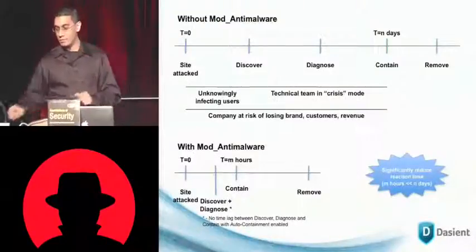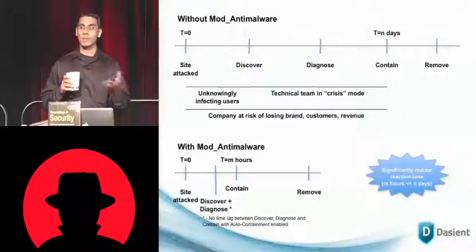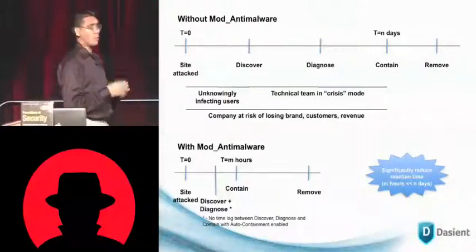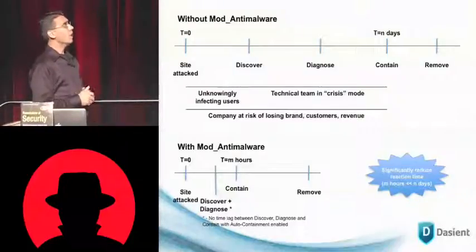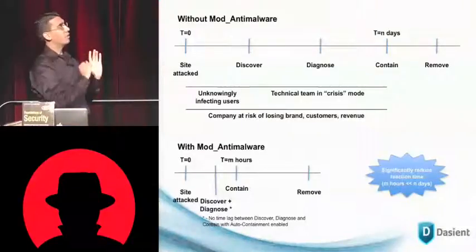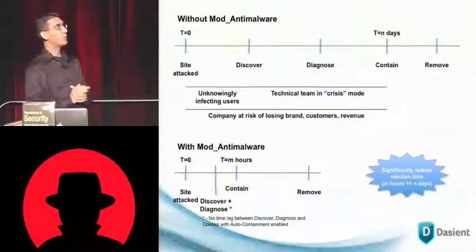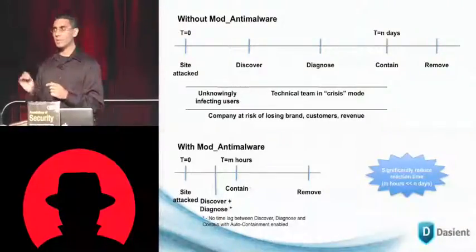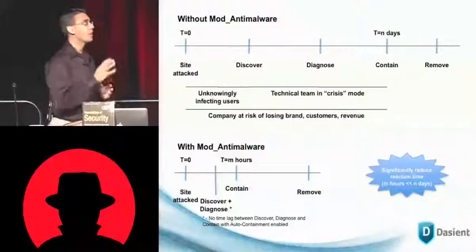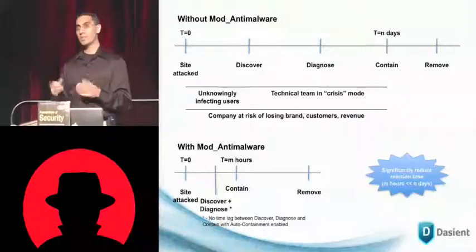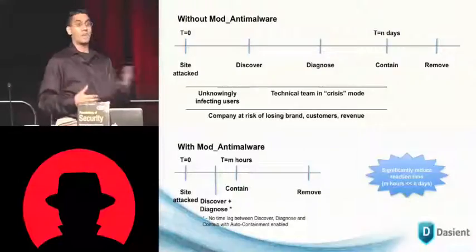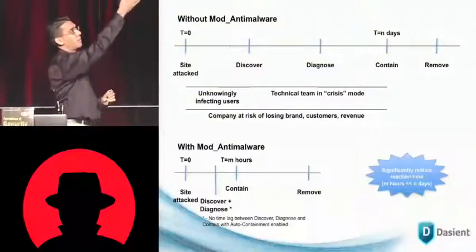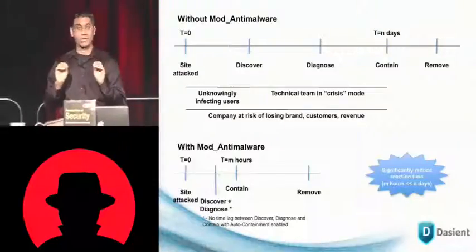Let me talk a little bit more about the details. But before I do that, I want to summarize the high-level benefit and talk about what the world looked like before mod anti-malware and after. Without mod anti-malware, a site would get attacked, and at some point it would get discovered by the website owners. But in the meantime, users would unknowingly be getting infected. Even after the website discovers the problem, their technical teams would typically be in crisis mode — senior engineers would have to get pulled off of whatever they're doing, figure out where the infection is, what pages it's impacting, what the infection is, what needs to be eliminated from the files and databases. Typically, before mod anti-malware, it would take some number of days for the good guys to contain the attack and remove it.